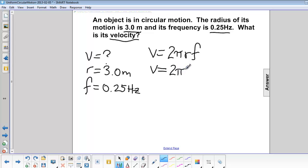2 pi times 3.0 meters times 0.25 Hz. So velocity will equal 4.7 meters per second.